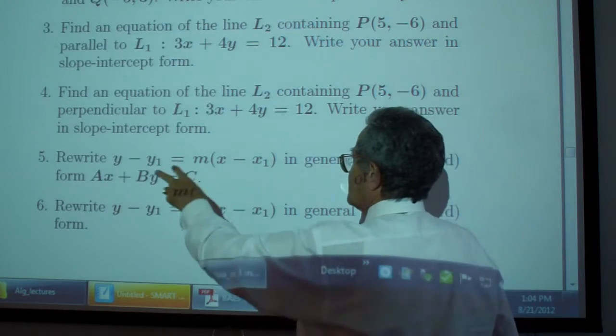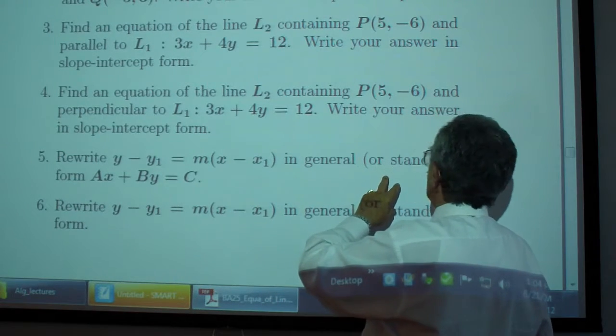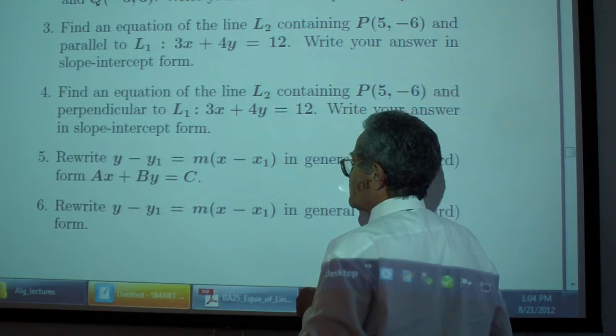Problem 5: Rewrite y - y₁ = m(x - x₁) in general or standard form ax + by = c.